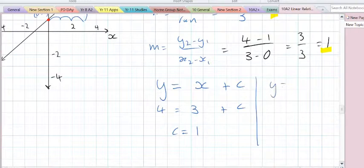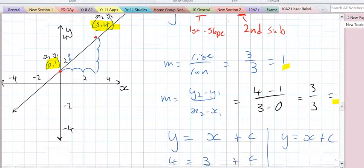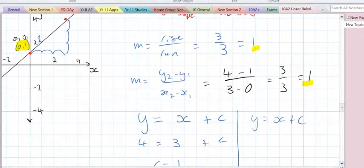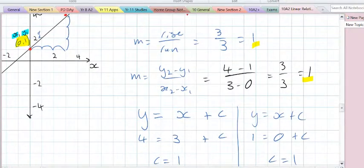What if we had chosen the other point? Instead of substituting in the point 3, 4, we could have substituted the point 0, 1. Meaning that when x equals 0, y equals 1. So 1 equals 1 times 0 plus c. Therefore c is also equal to 1. It doesn't matter which point we choose, we're still going to get the same c.